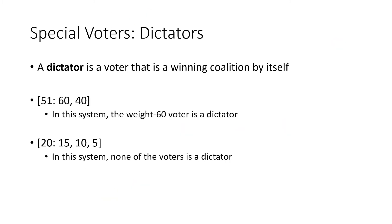We also have special voters with influence all by themselves. A dictator is a voter that is a winning coalition by itself. For example, in a system with quota 51 and voters with weights 60 and 40, the 60-weight voter alone exceeds the quota — so that voter is a dictator. They get to do whatever they want: if they vote yes, the motion passes; if they vote no, the motion fails. In the system [20: 15, 10, 5], none of those voters individually reaches 20, so there are no dictators in that situation.